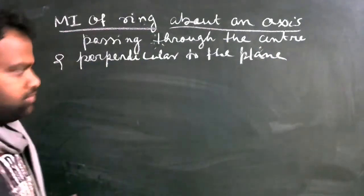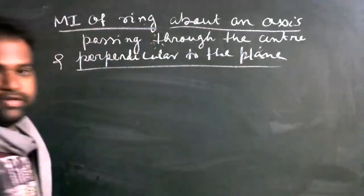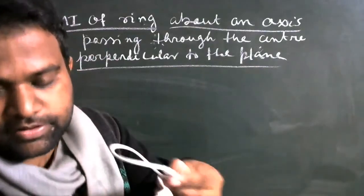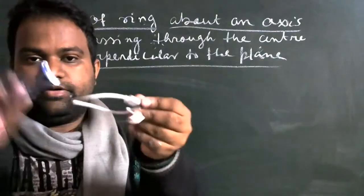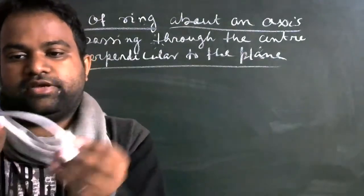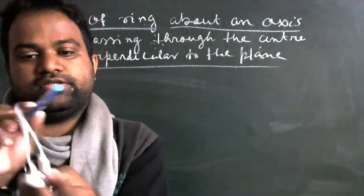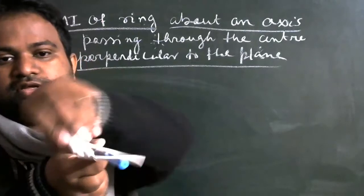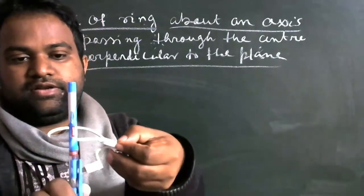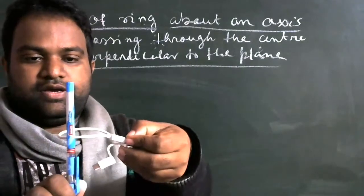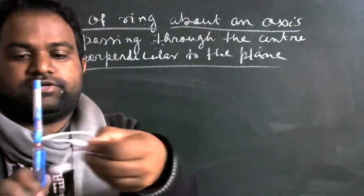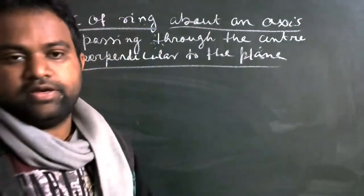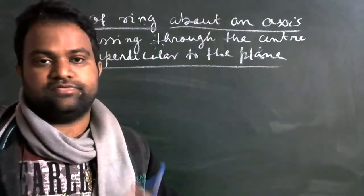Because a ring can rotate in many ways. For all the cases the moment of inertia will differ. You see this is a circle — if I keep my axis here about a tangent, the ring can rotate like this. If I keep the axis about the diameter, the ring can rotate like this. If I keep the axis tangent but perpendicular to its plane, then it can rotate like this. So many ways — I told you 3 to 4 cases — the ring can rotate about many different types of axis.